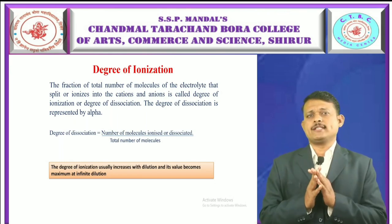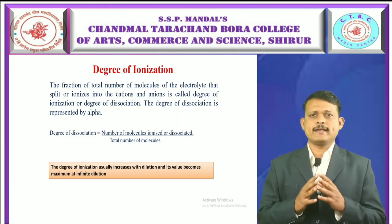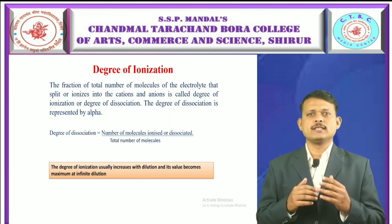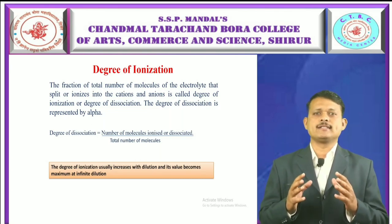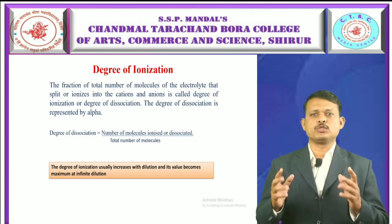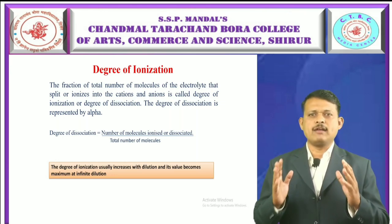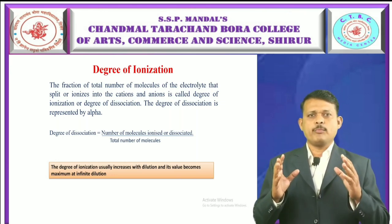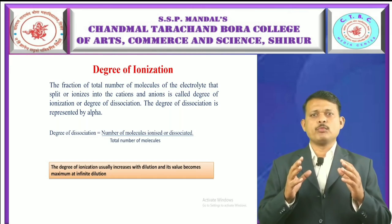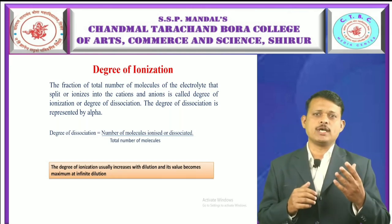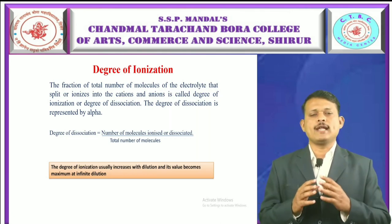Degree of ionization is defined as the fraction of the total number of molecules of the electrolyte that split or ionize into cations and anions. It is represented by the Greek letter alpha (α). Alpha equals the number of molecules ionized or dissociated in aqueous solution divided by the total number of molecules present in aqueous solution. That ratio is called the degree of ionization.